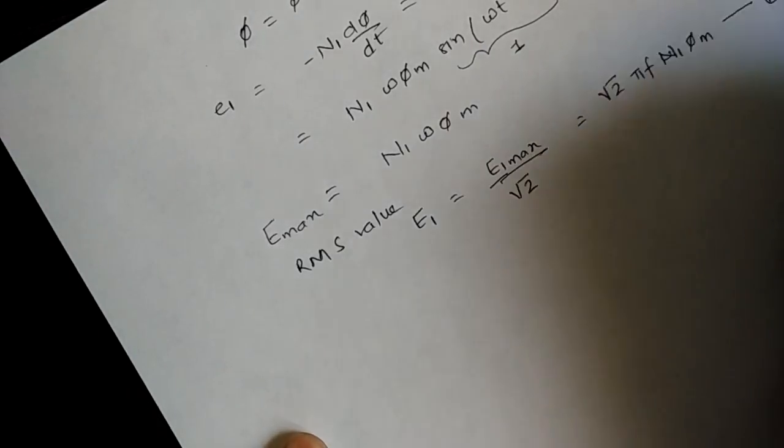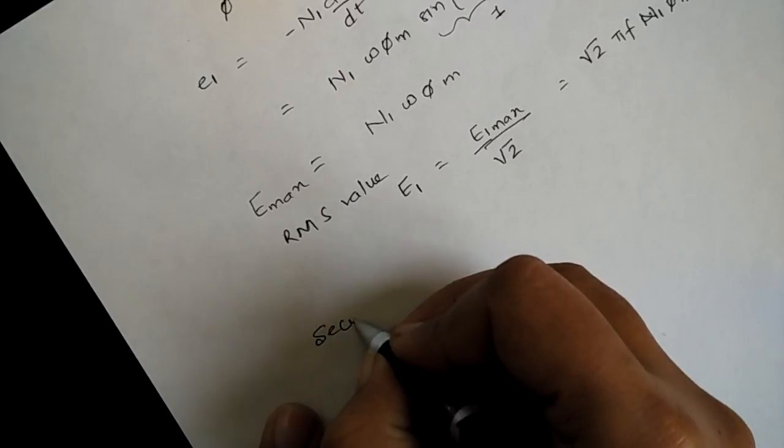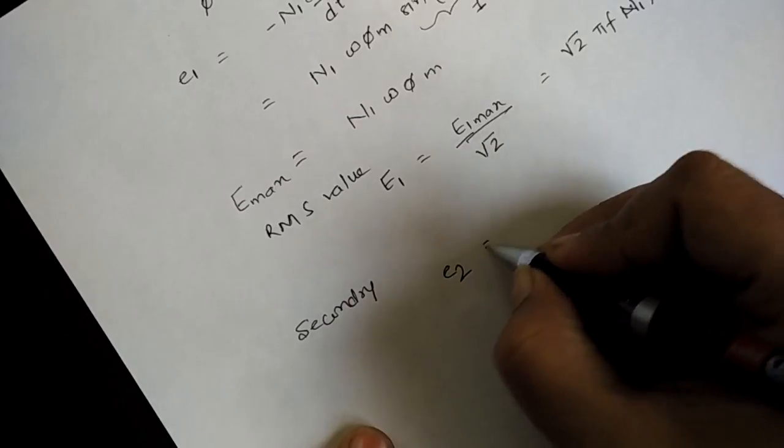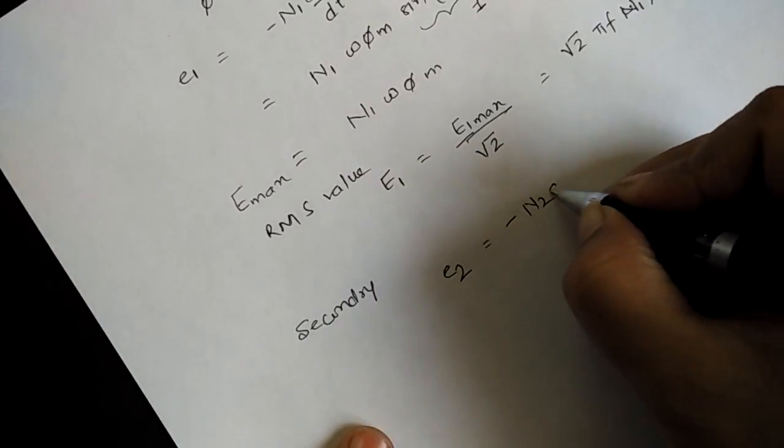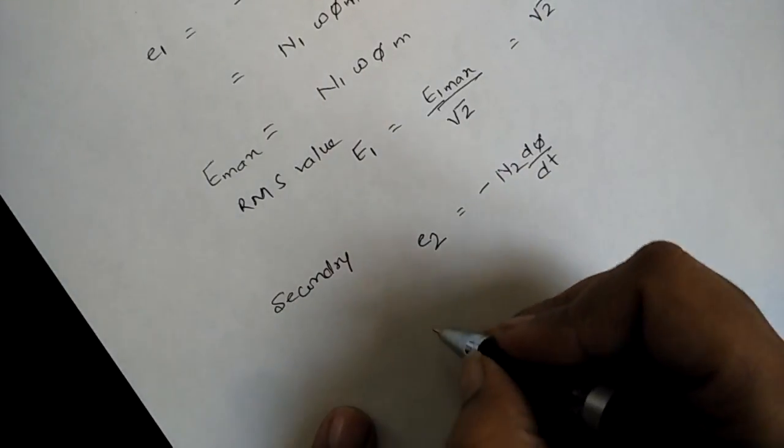Now same is the case for the secondary. If we go on the secondary side, the induced EMF e2 will be n2 into d phi by dt.